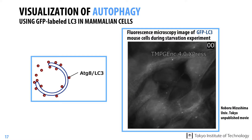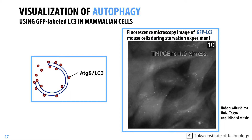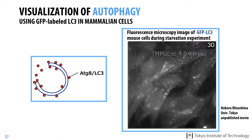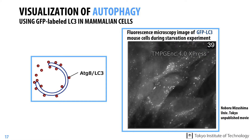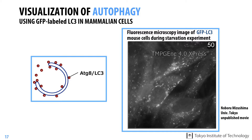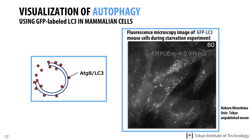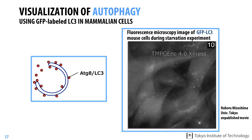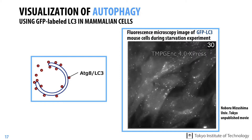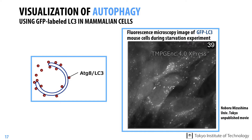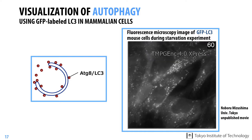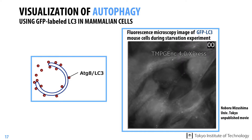As you can see in this movie of living mouse cells, shifting cells to starvation medium results in the formation of many puncta of GFP-LC3, representing autophagy-deficient membranes.